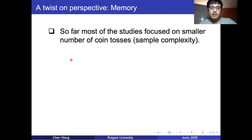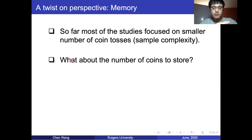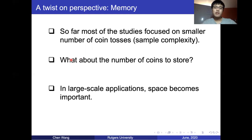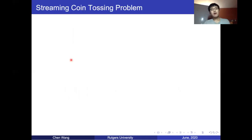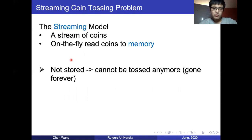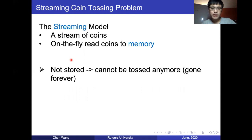Having solved the sample complexity problem, let's change our perspective and think about how many coins we need to store to find the most biased coin. The problem becomes interesting because in large-scale applications storing coins can be expensive — when the number of coins goes to millions or even billions, we really want to solve the problem storing as few coins as possible. So we study the problem under the streaming coin tossing model: coins arrive one by one on the fly. For each arriving coin, we can choose to toss it, store it, or toss a stored coin to compare — but if we choose not to store an arriving coin, we lose it forever.